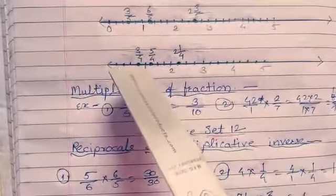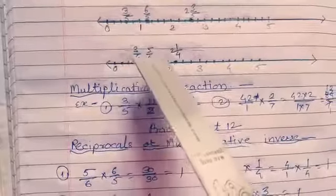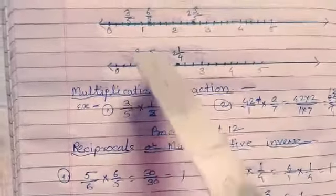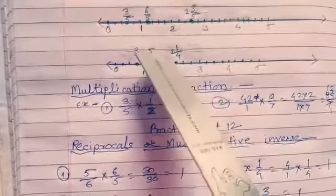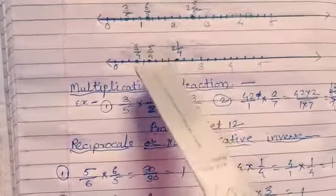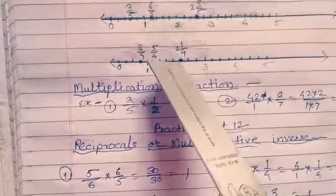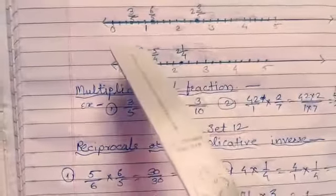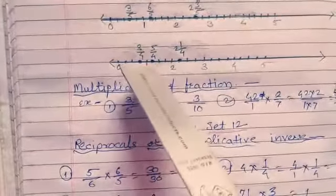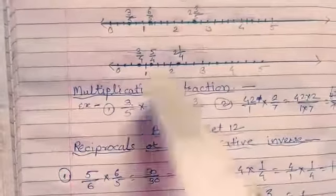Continuing: 4, 5 — this is 5 upon 4. Then 6, 7, 8 — 8 means 2 is complete. We take complete 2, which is here, then 1 upon 4 — this is 1 upon 4. So 3 upon 4 is this point, 5 upon 4 is this point, and 2 and 1 upon 4 is this point.